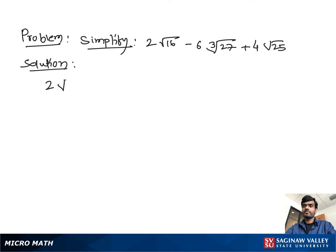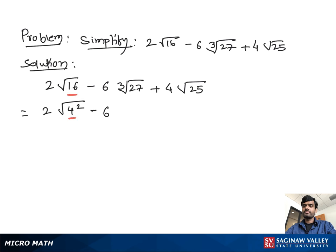Simplify 2 times square root of 16 minus 6 times cube root of 27 plus 4 times square root of 25. We can write this as 2 times square root of 4 squared, which is 16, minus 6 times cube root of 3 cubed, which is 27, plus 4 times square root of 5 squared, which is 25.